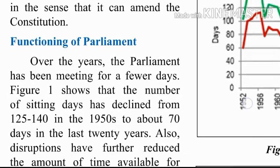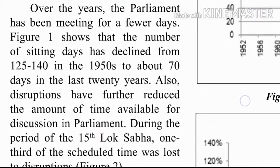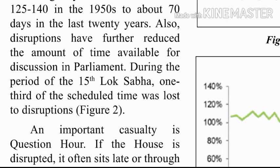Over the years, the Parliament has been meeting for fewer days. Figure one shows that the number of sitting days has declined from 125 to 140 in the 1950s to about 70 days in the last 20 years. Disruptions have further reduced the amount of time available for discussion in Parliament.